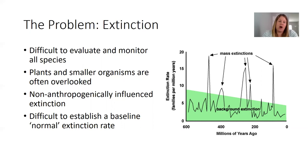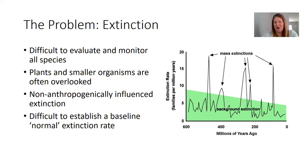It's also hard to assess what extinction is occurring without direct human cause. Establishing that baseline of non-anthropogenically influenced extinction can be quite difficult. In the figure on the right, the green area represents background extinction. These days it's really quite difficult to differentiate natural from human-caused extinctions — that's basically these last two points here.